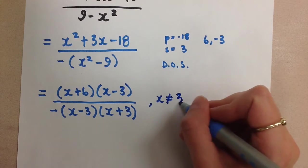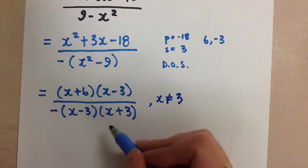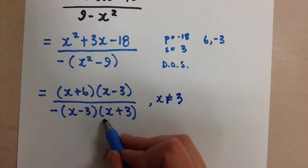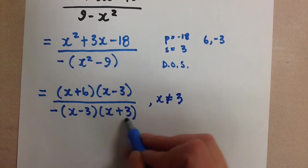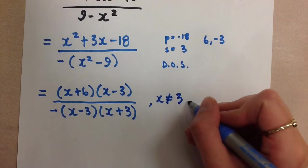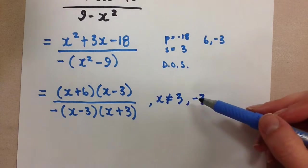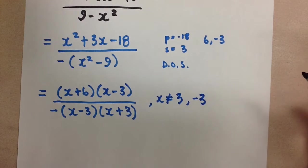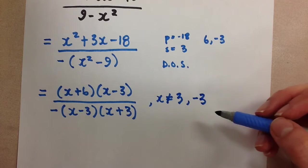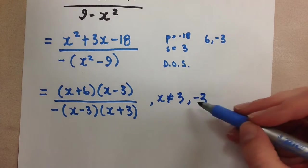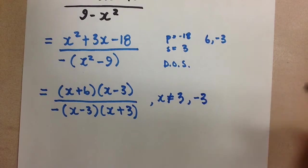So we know that x can't be positive 3, otherwise our denominator will be equal to 0. And in the same way here, x can't be negative 3 because then it will make this factor equal to 0. So we can't have that either. Those are our restrictions. So I always think it's best to get our restrictions before we do the cancelling of factors so that we don't unintentionally forget a factor, and then therefore a restriction.